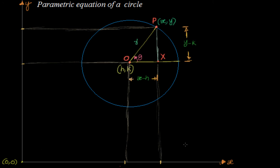Now let's have a look at this figure. We have a circle with center h comma k and there is a point on the circle with coordinates x comma y. Now how can I represent x comma y with the variable theta — that is what we are going to see as part of the parametric equation of a circle. We want to represent x comma y in terms of the parameter theta, so in a single variable.